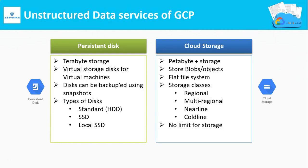Under Unstructured Data Services of GCP, you have two services: Persistent Disks and Cloud Storage. Persistent Disks can hold up to TB storage capacity, also referred to as PD. Persistent Disks give you virtual storage disks for your virtual machines. There are three types: Standard Persistent Disk, Solid State Drive Persistent Disk, and Local SSDs.